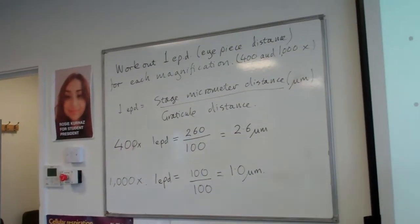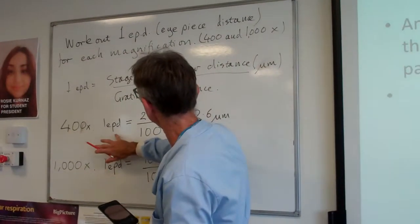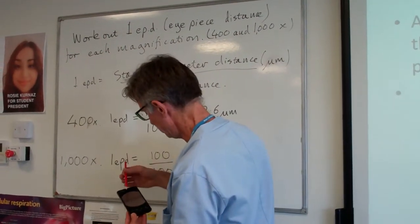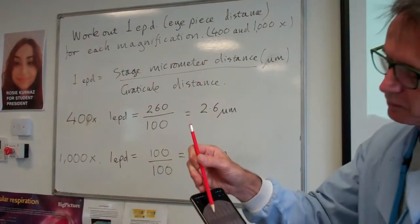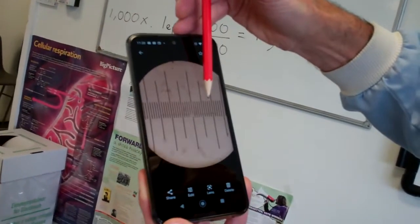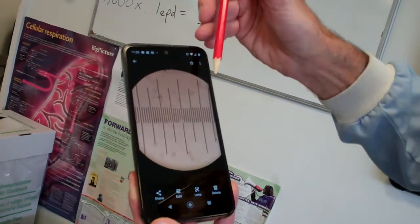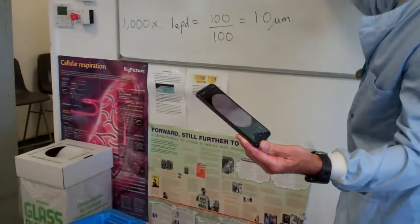If you go over to the board, I'll show you what I've got. What I want to know is how much each of these little eyepiece divisions equals. I've got 26 stage micrometer divisions from 0 to 10, which is 260 micrometers.